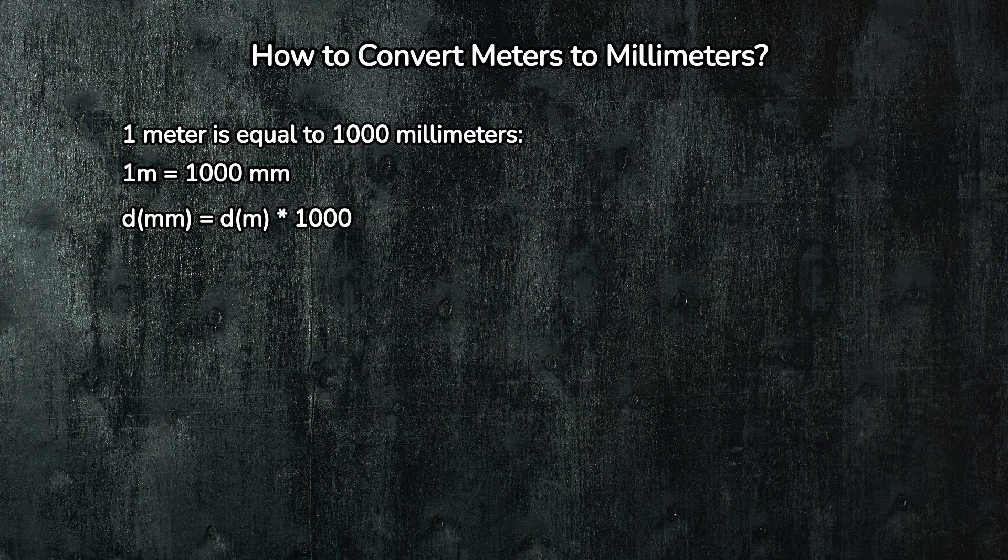First things first, let's understand the basics. A meter is the base unit of length in the metric system. One meter is equal to how many millimeters? One meter equals 1,000 millimeters.